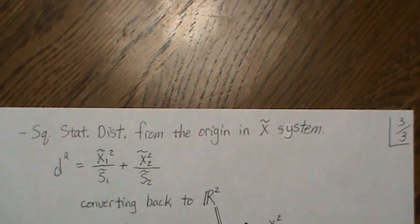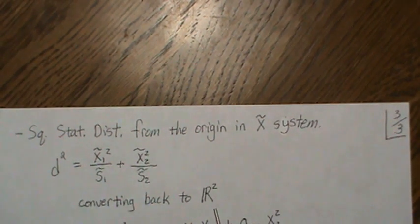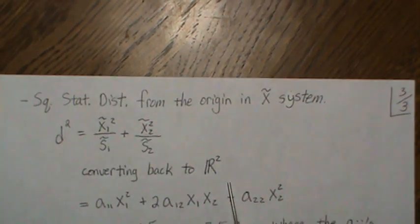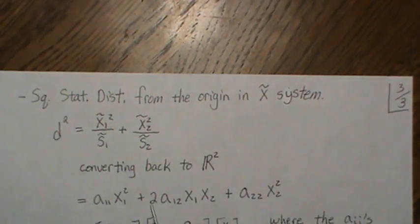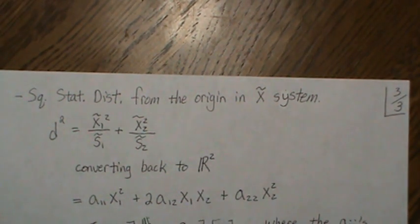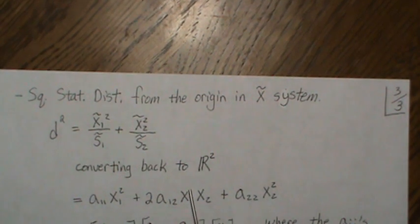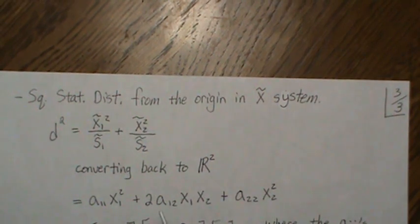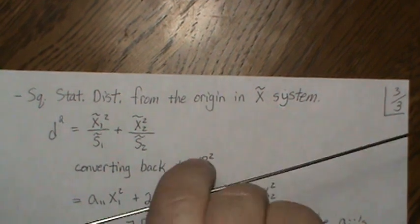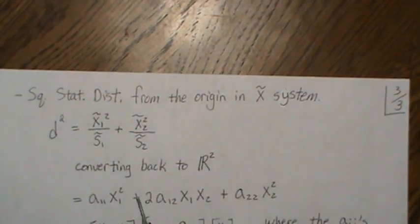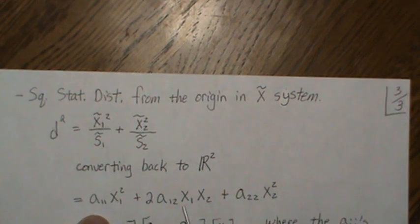Now we need to convert it back to sort of the regular R2 space. Even though they're both R2, it's the original R2 space. And then we get something like this. So we get coefficients in front of our X1 and X2 variables. And it's this cross product that accounts for that, the line instead of being up and down to be angled.